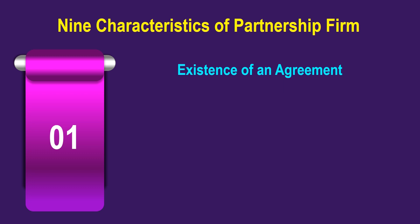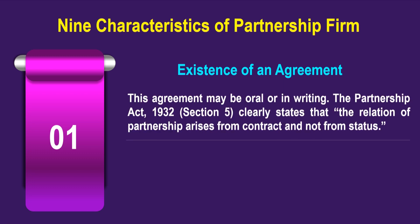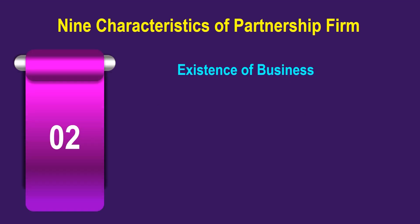The next topic is the 9 characteristics of a partnership firm. The first is the existence of an agreement — this agreement may be oral or in writing. The Partnership Act 1932, Section 5, clearly states that the relation of partnership arises from contract and not from status.